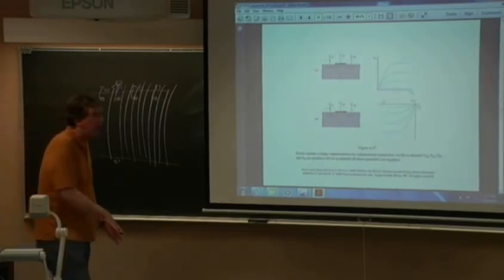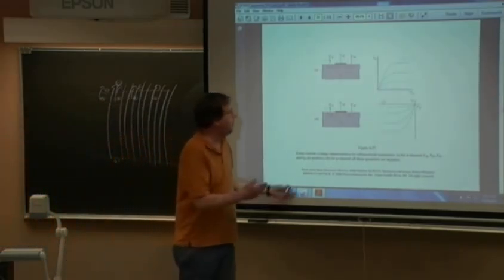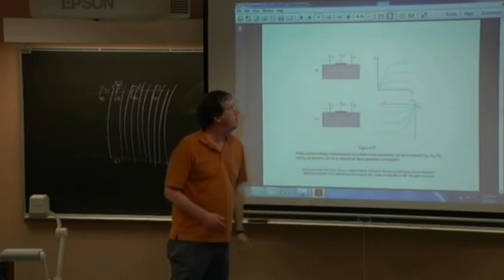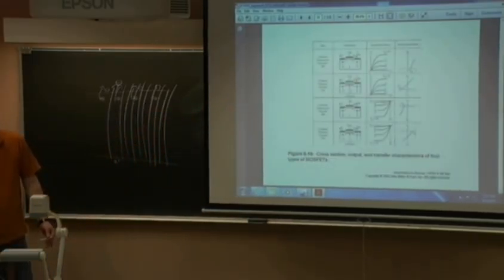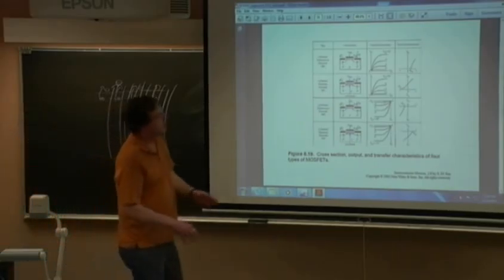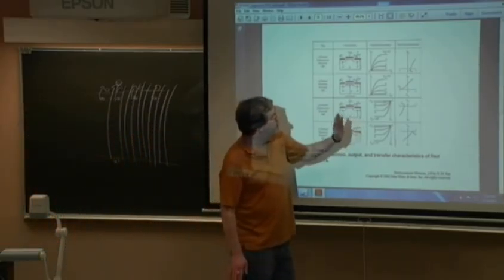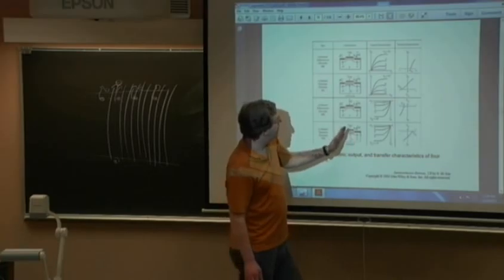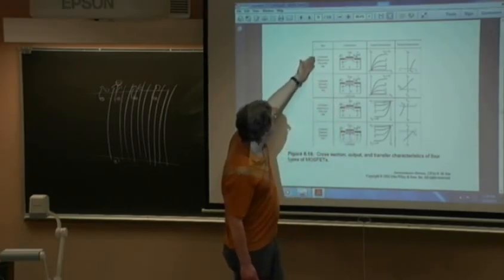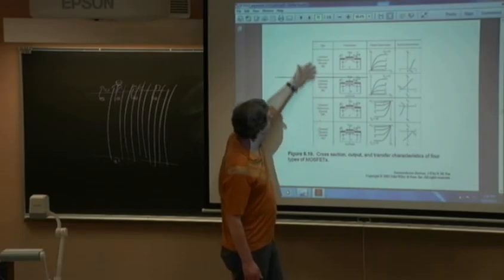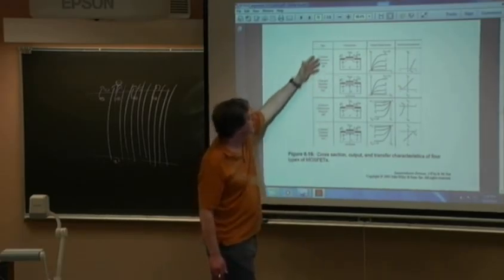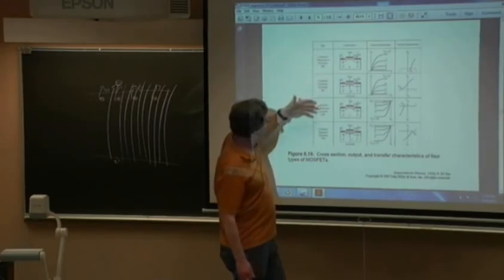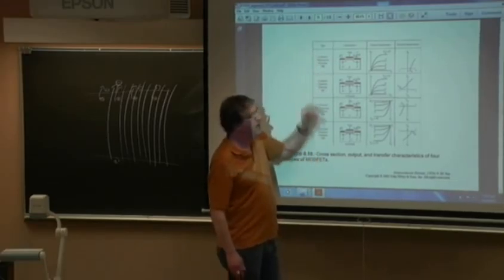PMOS versus NMOS are complements — inversions of each other. As I move the maximum gain point, I can go from normally-on to normally-off. So for both P and N types I have four different permutations as a circuit designer: normally-off NMOS, normally-on NMOS, normally-off PMOS, normally-on PMOS.